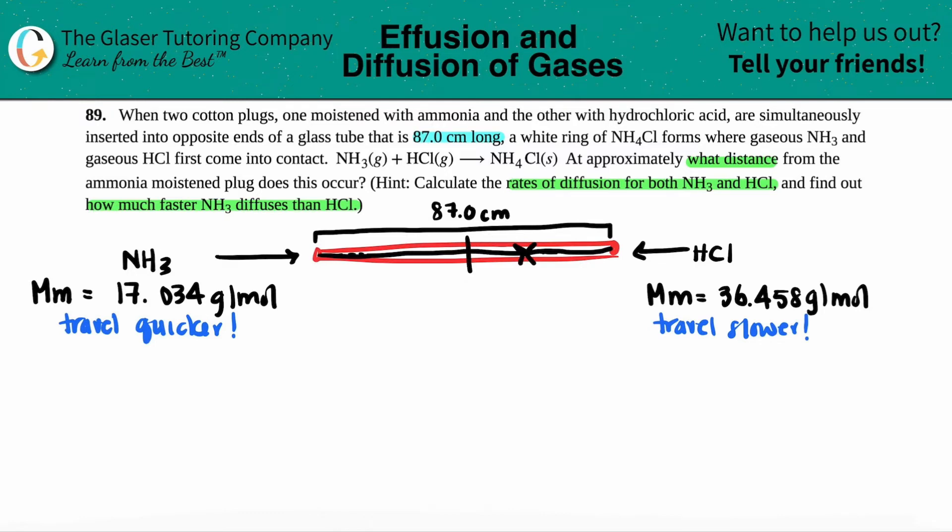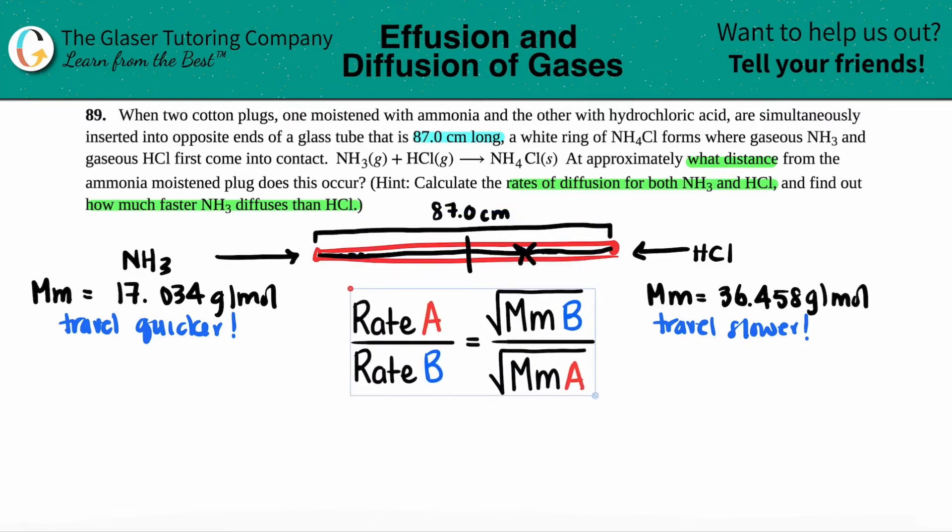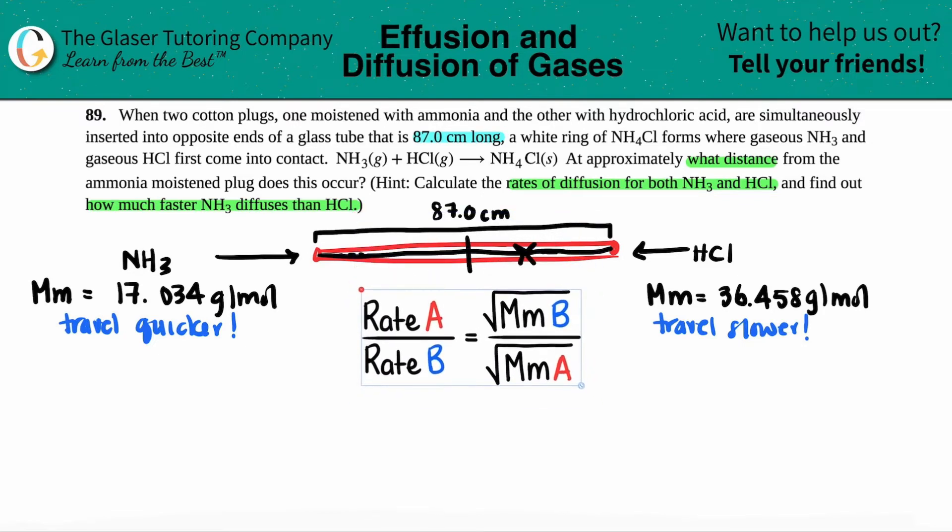Now let's see what the rate of diffusion is. That's where the rate of diffusion formula comes in, which we've seen time and time again. In this case, I'm going to put NH3's rate on top. Generally, I like to put the less mass compound rate on the top because it's easier when I do my math. So I'm going to say that A is NH3 and B is HCl.